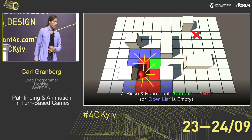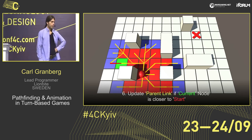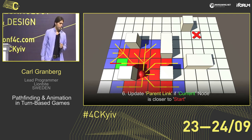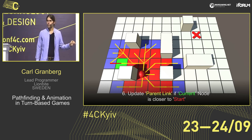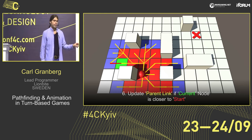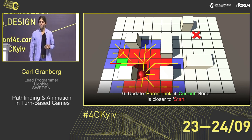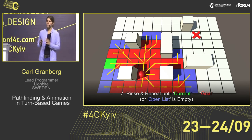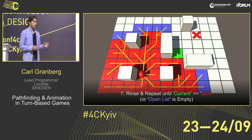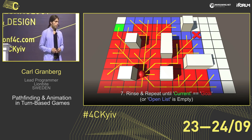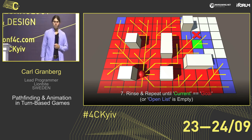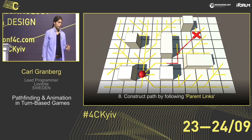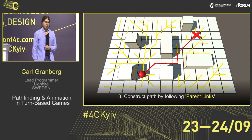Then we just repeat this process over and over again. Here we have a node that's been added to the open list, but we've found a shorter path leading to the same node — you see this parent link marked in red. This is a shorter path to this node, so we just update this parent link and carry on. You can see how this algorithm spreads out in a circular fashion from the start, always picking the node closest to the start, until it finds the goal. After this, it's easy to construct the path by just following the parent links all the way back to the start. And voila, there's our shortest path.